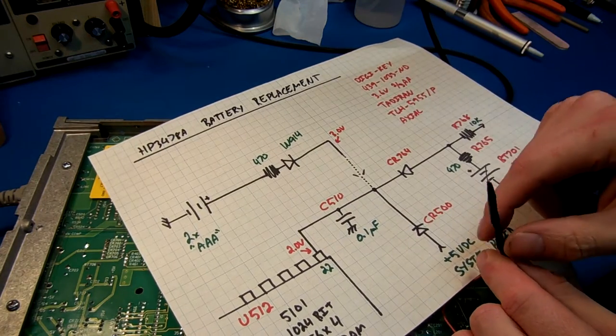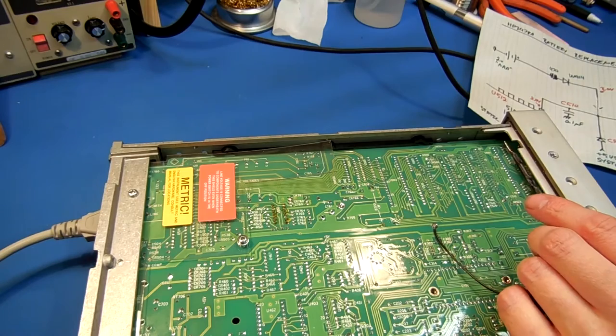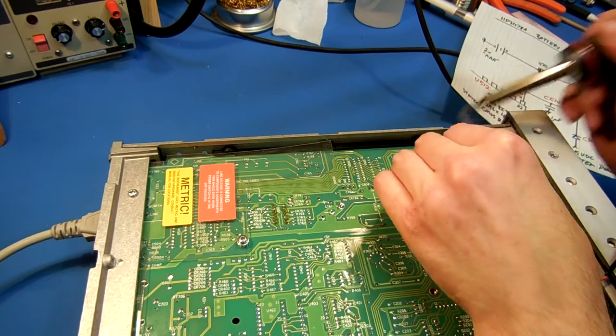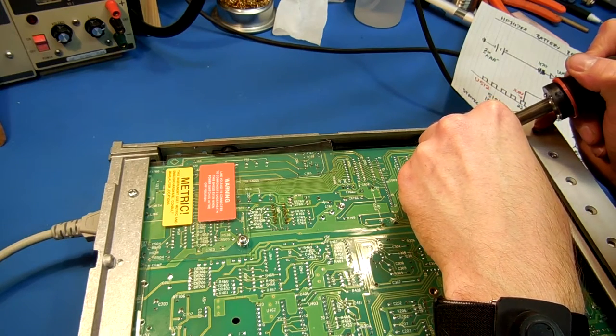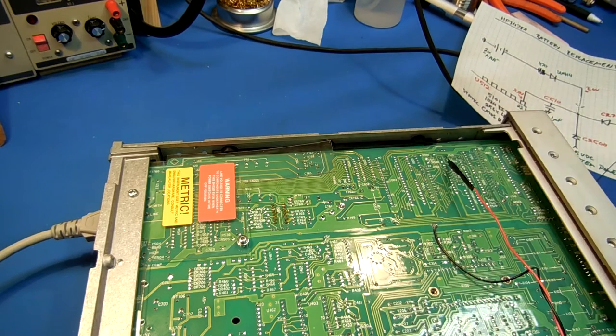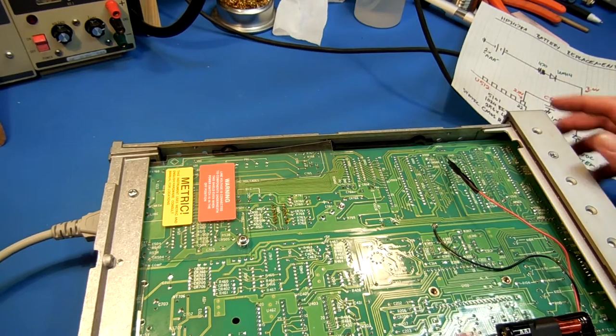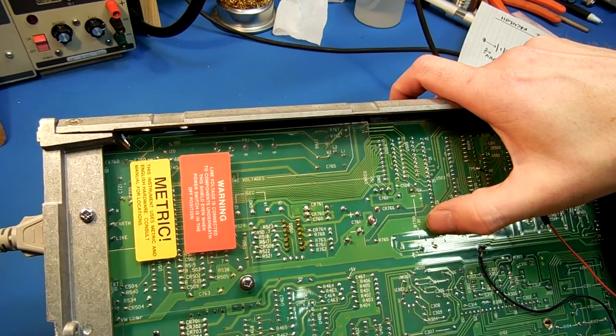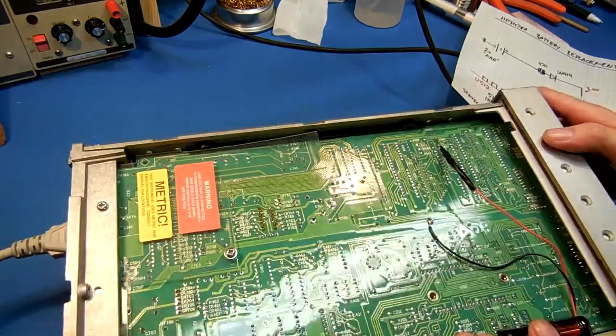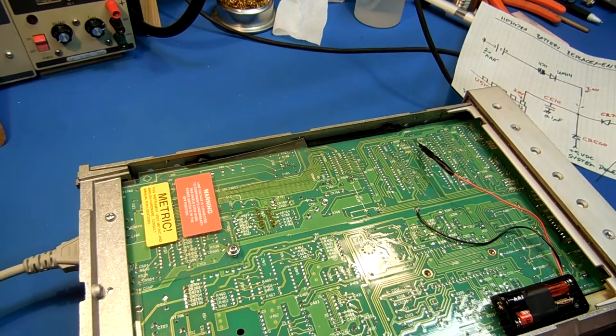I just put electrical tape on there just to keep it from shorting out if it were to touch. This is going to go to the left pad there on C510. Okay. Now, here's the solder pads for the original battery. It's labeled BT701. This is the plus. This is the minus. We have our backup installed in parallel. And, double-checking the front panel looks okay. No error messages.